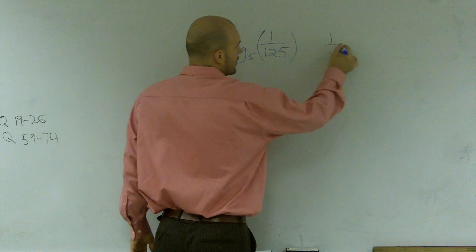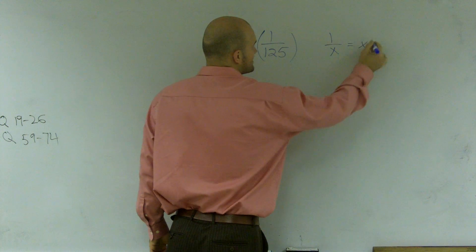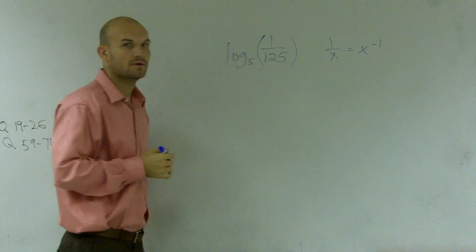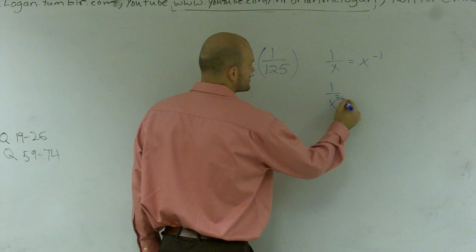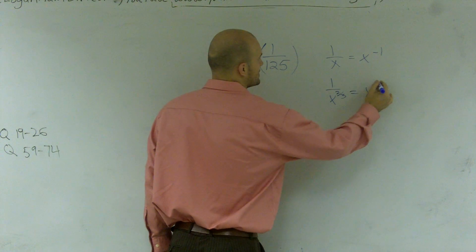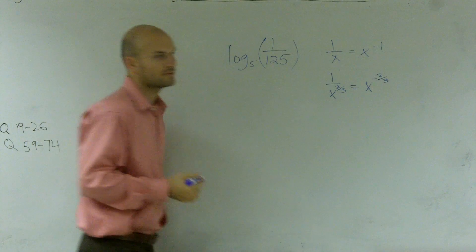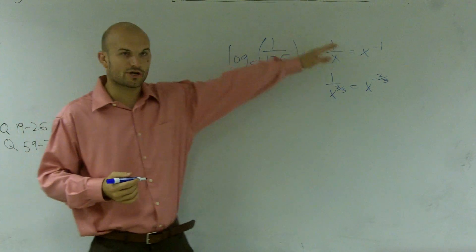So remember this rule, 1 over x is x to the negative first power, right? Same thing if I said 1 over x to the two-thirds is equal to x to the negative two-thirds, okay? Those are equivalent.